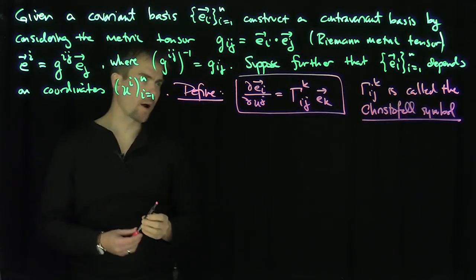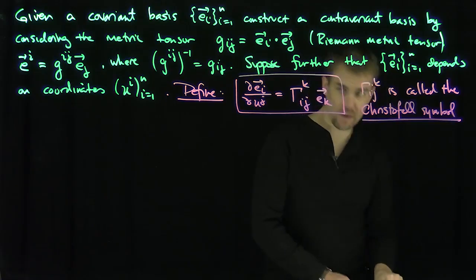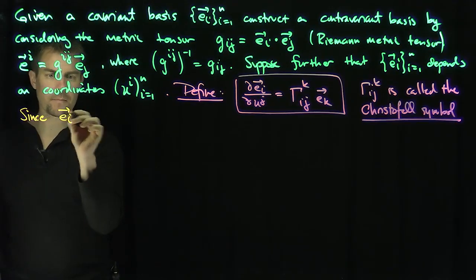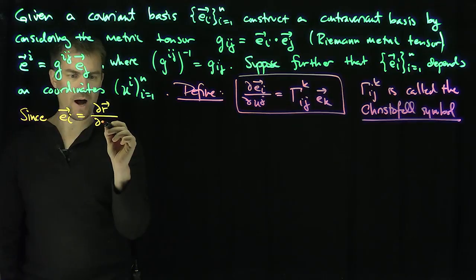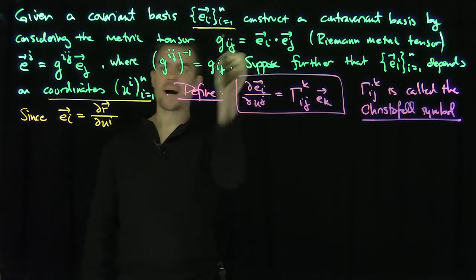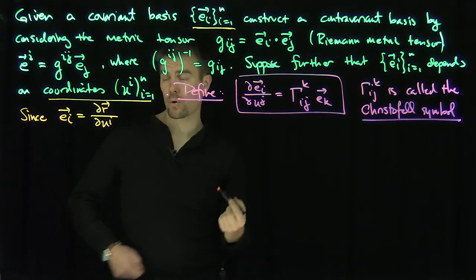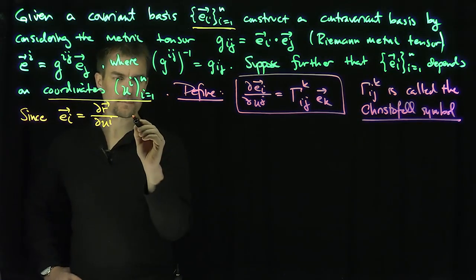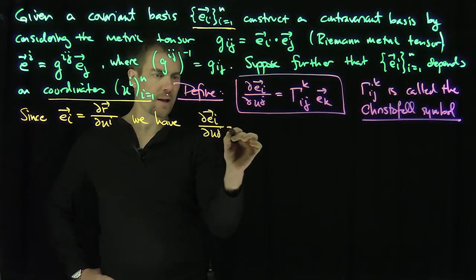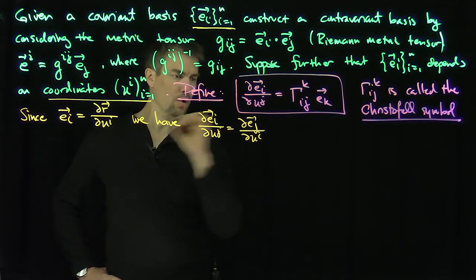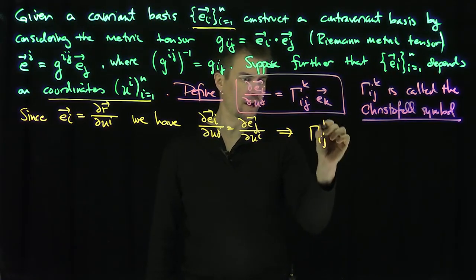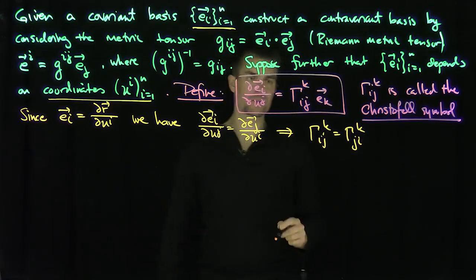The Christoffel symbol depends on three parameters: i, j, and k. One immediate consequence of this definition is that since e_i is the partial of r with respect to u^i, and when we make the assumption that e_i's arise from the vector field of position — so they're natural coordinates — we have that ∂e_i/∂u^j equals ∂e_j/∂u^i. This implies immediately that Γ^k_ij equals Γ^k_ji, so there's an implicit symmetry.